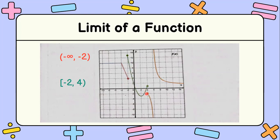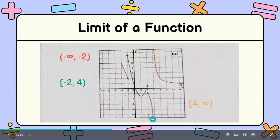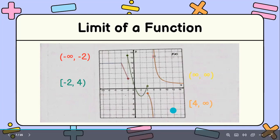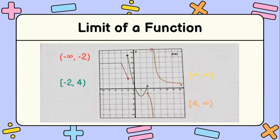The next function starts at positive 4, where positive 4 is included — it is shaded — and the graph extends to positive infinity. Lastly, another given function does not give an exact endpoint and extends in both directions toward infinity, so it goes from positive infinity to positive infinity as well.